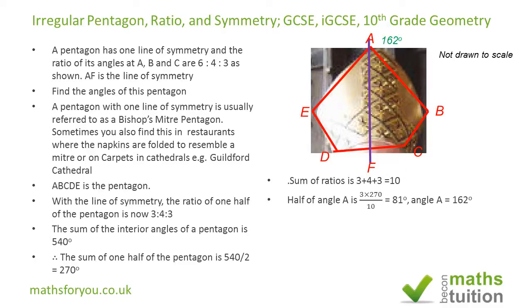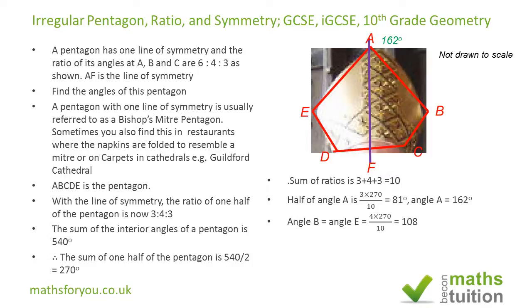For angle B, we use 4 over 10 times 270, which gives 108 degrees. So angle B is 108 degrees, and by symmetry angle E is also 108 degrees.